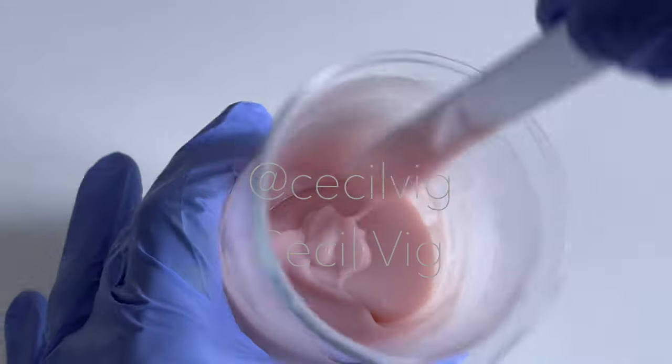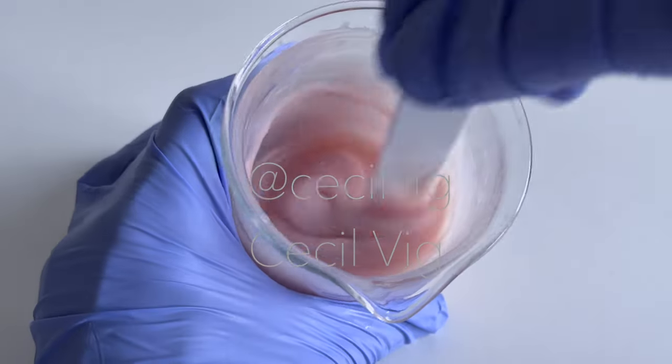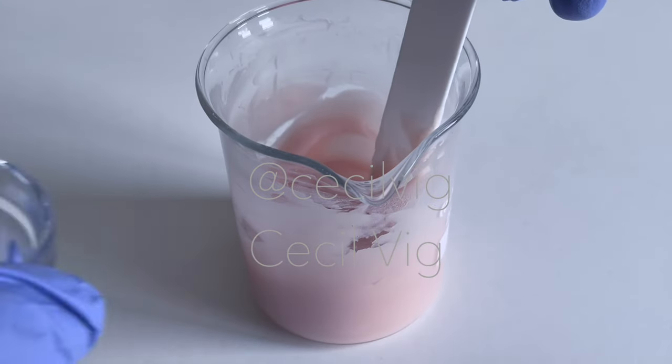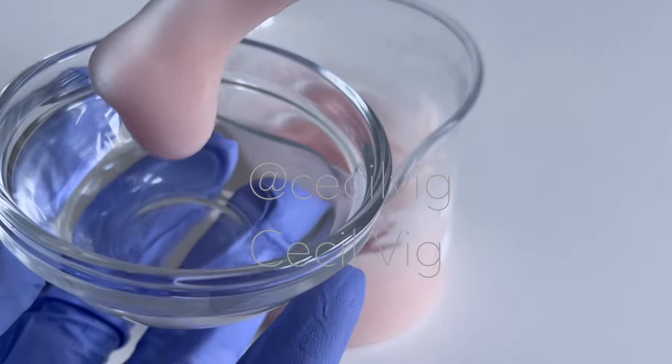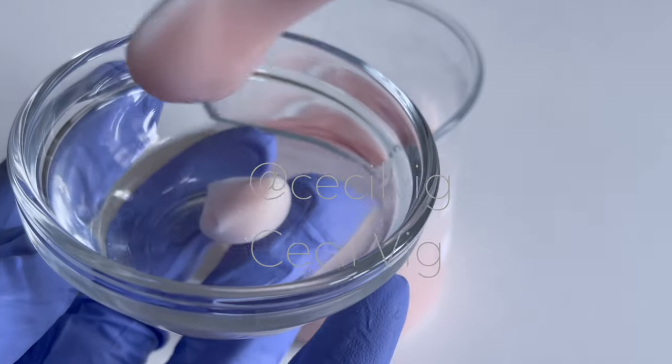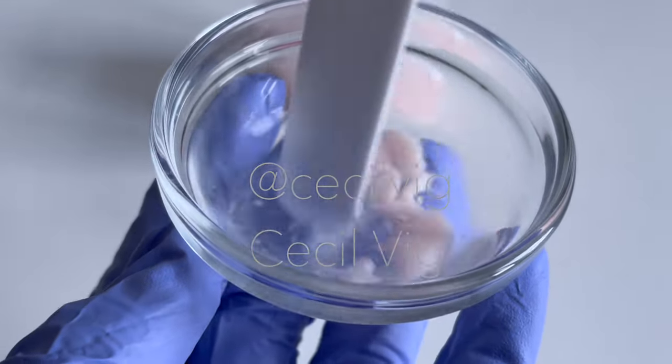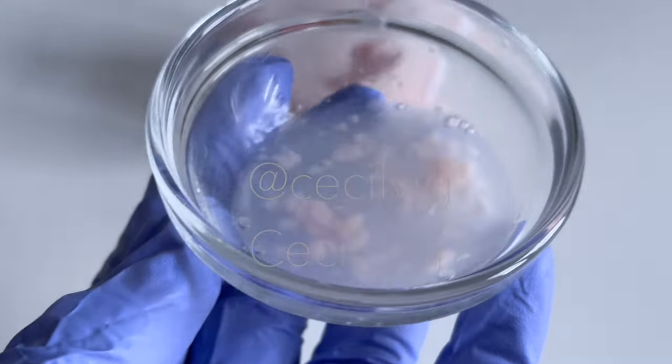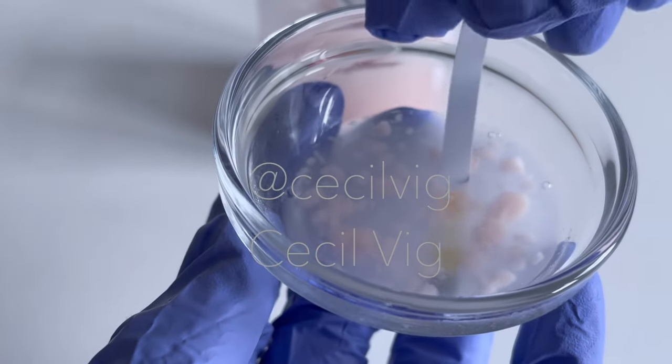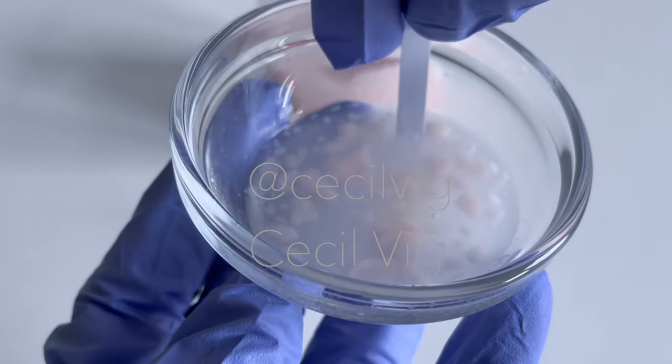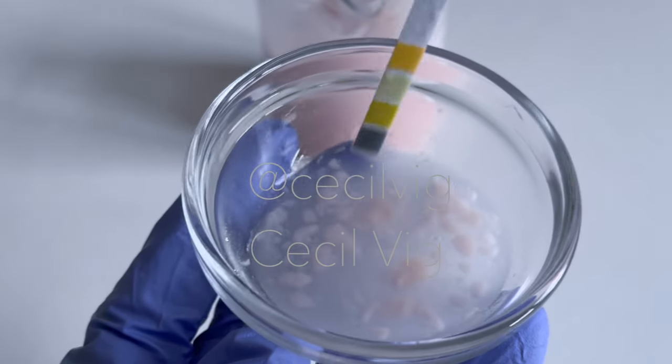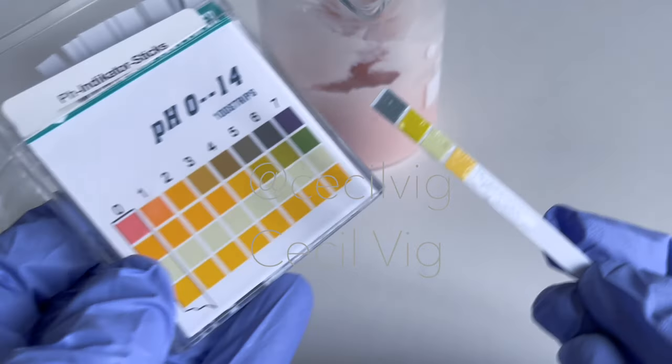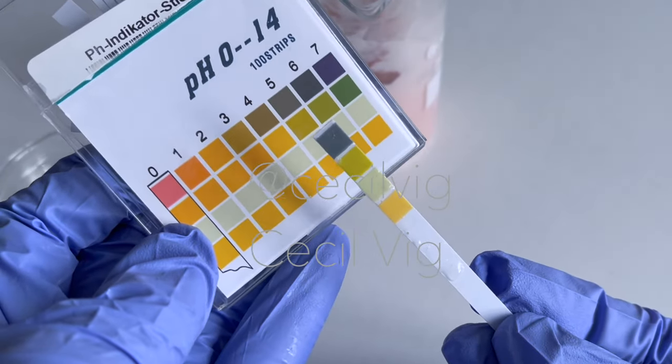Then I test the pH value of the hair conditioner. To test the pH value, I add 2 grams of the hair conditioner to 8 grams of distilled water. Mix well. Then dip my pH strip into the mixture for about 10 seconds. Remove it and see what the pH value is. As you can see, the pH value is around 6.